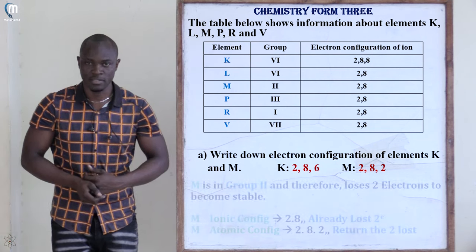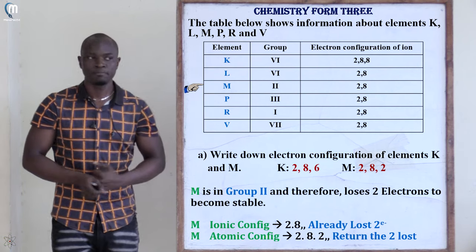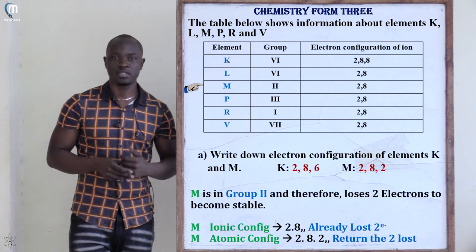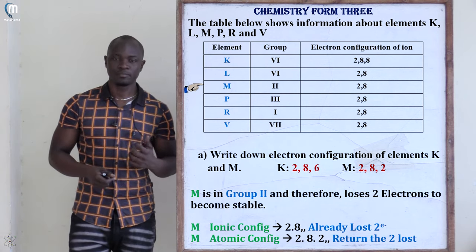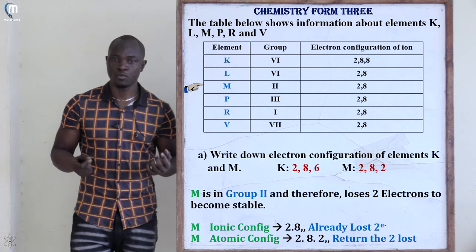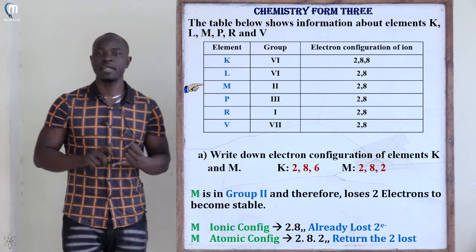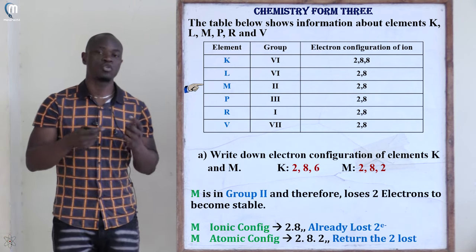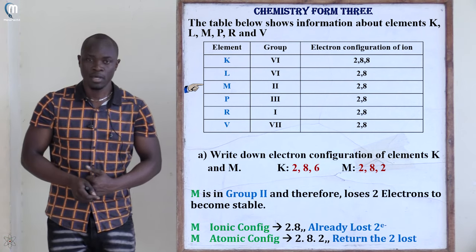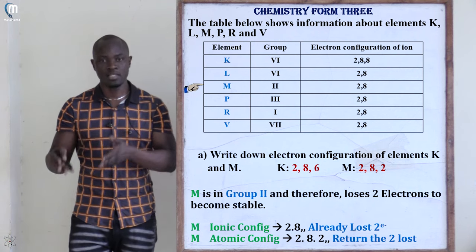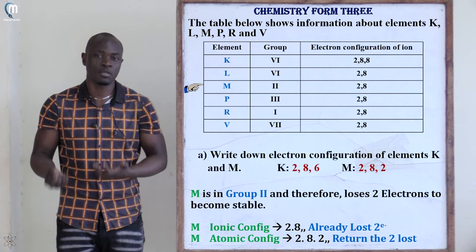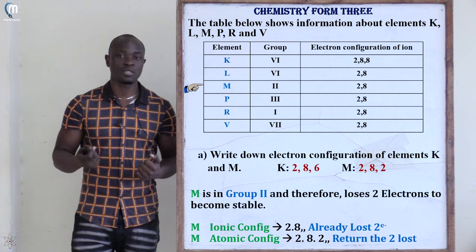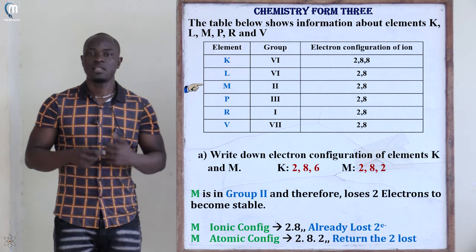The next element is element M. Its ionic configuration is 2,8. Element M is in group number two. Group two elements react by losing two electrons to become stable. These include helium, beryllium, magnesium, and calcium — with the exception of helium, which is already stable and fits in group eight. Helium is included in group two because it has two electrons in the outermost energy level. Group two elements react by losing two electrons.